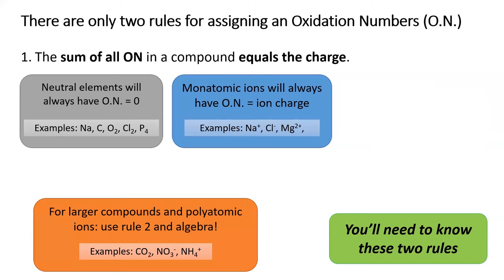For larger compounds and polyatomic ions, we need another rule to determine the oxidation number of each atom. The second rule is that oxygen has an oxidation number of -2 unless it's a peroxide compound, in which case the oxidation number is -1. This may not seem like enough rules, but I promise you it is.